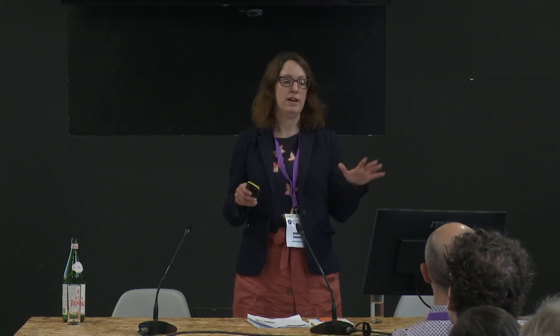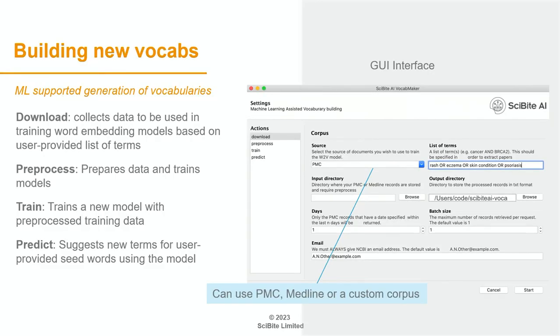For building new vocabs when we want to expand into a new area or there's no good public ontology available, one of the models we use is word2vec — a word embedding model. Words or phrases are given a vector, and those vectors are chosen so they can semantically represent that term. The closer in meaning terms are, the closer they appear within the vector graph. From that word2vec approach, we have an internal model for generation of new vocabs.